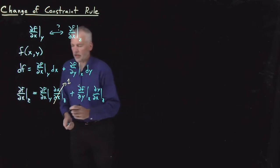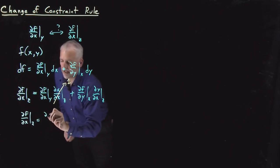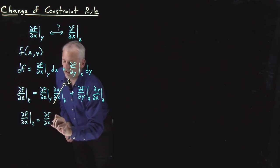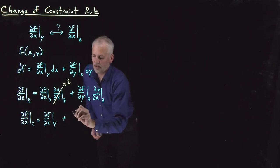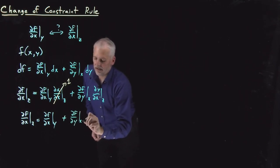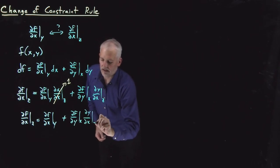So this simplifies a little bit, and I can say ∂f/∂x at constant z is equal to ∂f/∂x at constant y, multiplied by 1, plus ∂f/∂y at constant x, dy/dx at constant z.